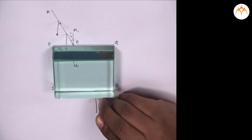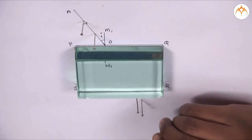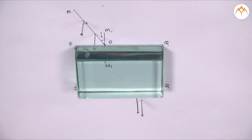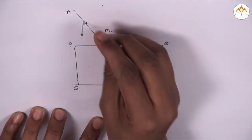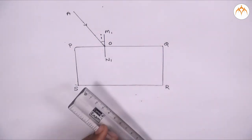We take a fourth paper pin and place it in such a way that it is in the same line as the other three pins. Remove the glass slab. Join these pins 3 and 4. Extend this line up to SR.